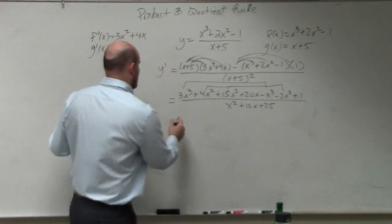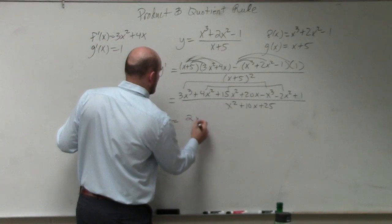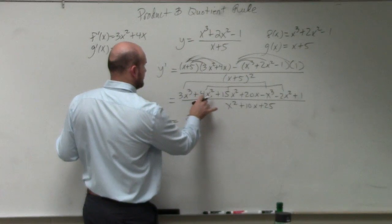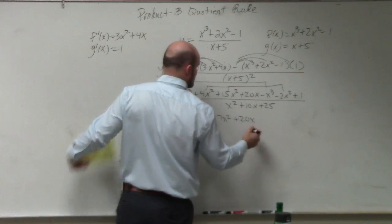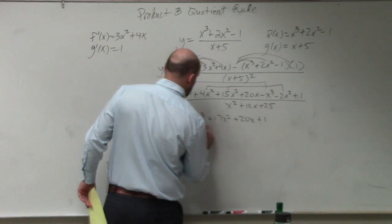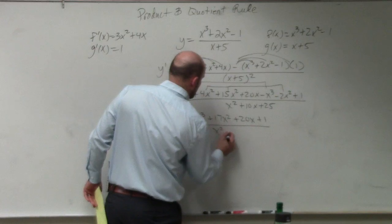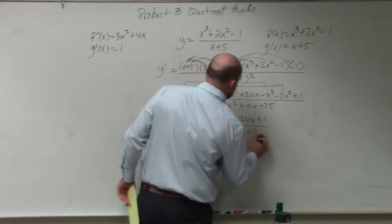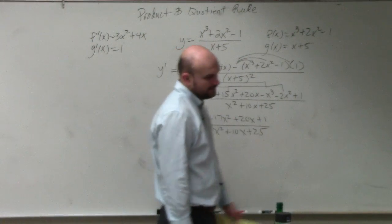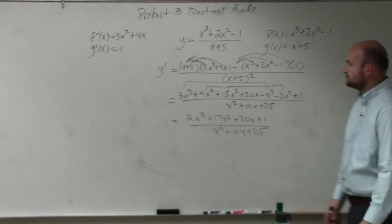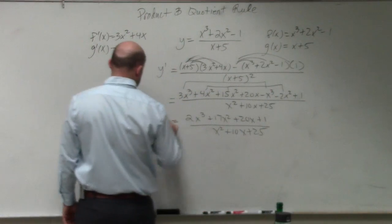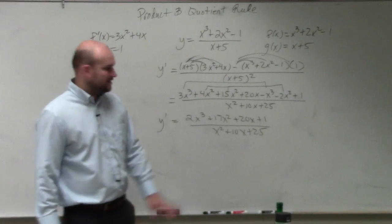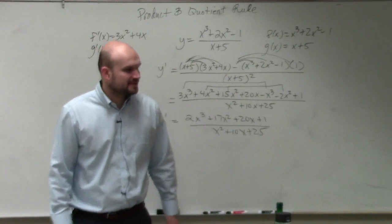So therefore, my final answer is 2x cubed plus 17x squared plus 20x plus 1. And I'm getting even bad about that. Y prime equals my final answer. Right? Maybe you guys are getting...